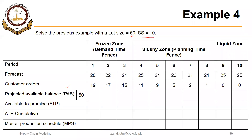So we have an initial inventory of 50, no MPS, so 50 plus 0 minus 19 would be 31, and 31 minus 17 is 14, so that is greater than 10, so we don't need an MPS.